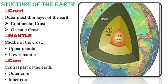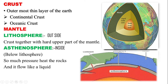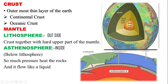Looking at the structure of the earth in detail: the crust is the outer layer, divided into continental crust and oceanic crust. In the image, you can see the continental crust represents the land surfaces and continents, while the oceanic crust consists of seas and oceans. All seas and oceans form the oceanic crust, and land surfaces are considered the continental crust.